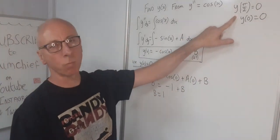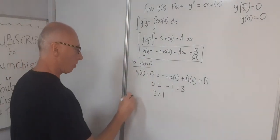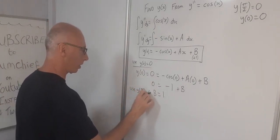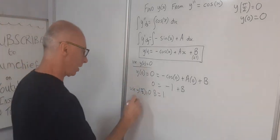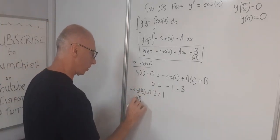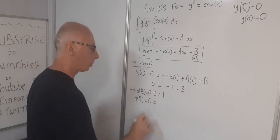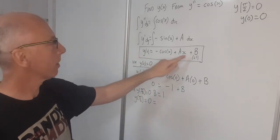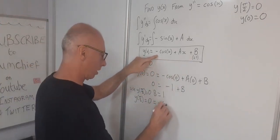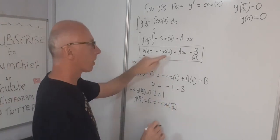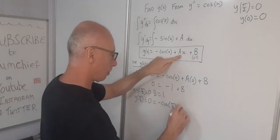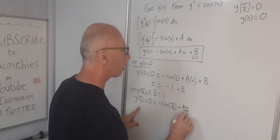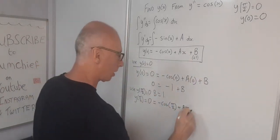Now our next condition we've got is y of pi over 2 is 0. So I'm going to now use y of pi over 2 equals 0. Y of pi over 2 equals 0 equals, now back to our what we solve for y of x. So minus cosine pi over 2 plus a times pi over 2, so our x is pi over 2, plus a pi over 2, and then plus b, which is 1.